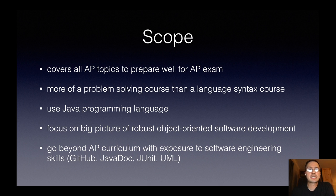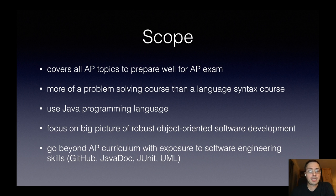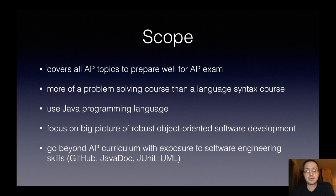The scope of this course is that it will cover all the AP topics and students will be well prepared for the AP exam come May. It is really more of a problem-solving course than a language syntax course — that's the biggest change from Computer Programming I and II, and what makes this course challenging. We use the Java programming language, as specified by the College Board. Overall, it focuses on the big picture of robust object-oriented software development. We are fortunate to go beyond the strict AP curriculum and expose students to software engineering skills such as GitHub, JavaDoc, JUnit, and UML.